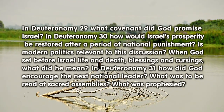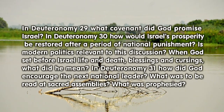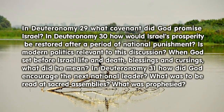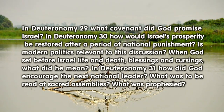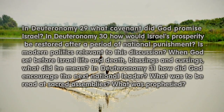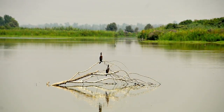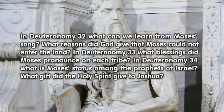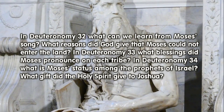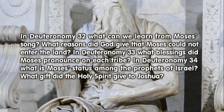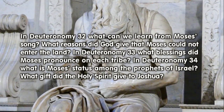In Deuteronomy 31, how did God encourage the next national leader? What was to be read at sacred assemblies? What was prophesied? In Deuteronomy 32, what can we learn from Moses' song? What reasons did God give that Moses could not enter the land?